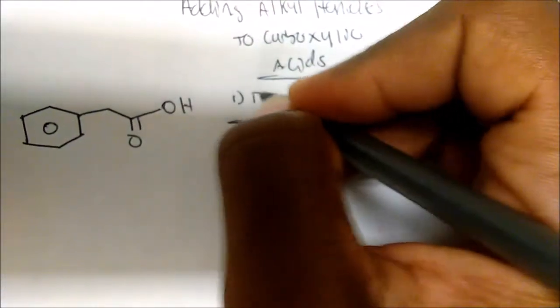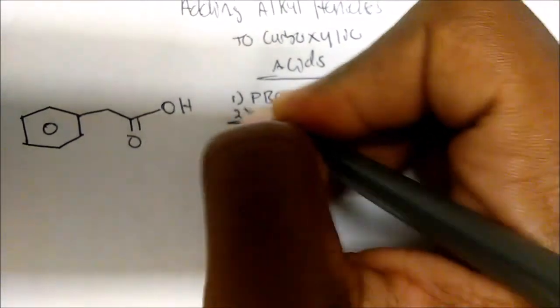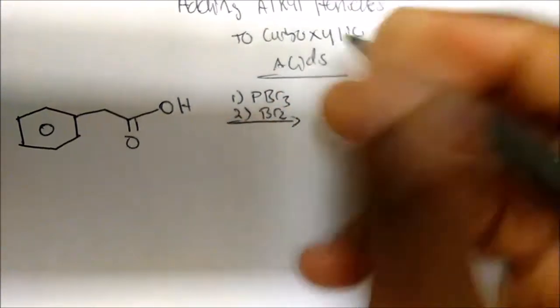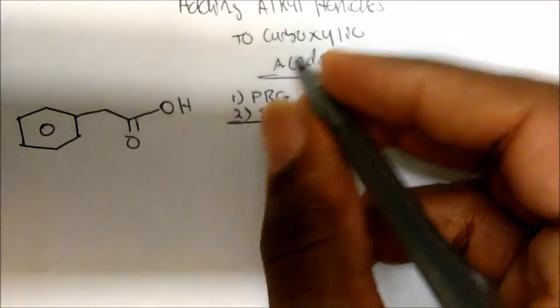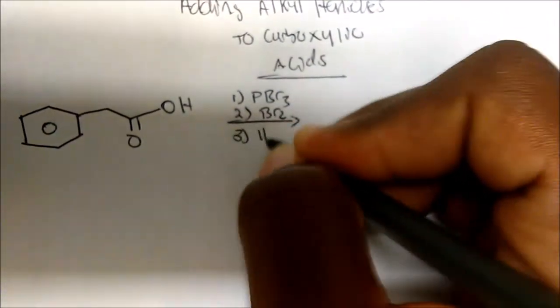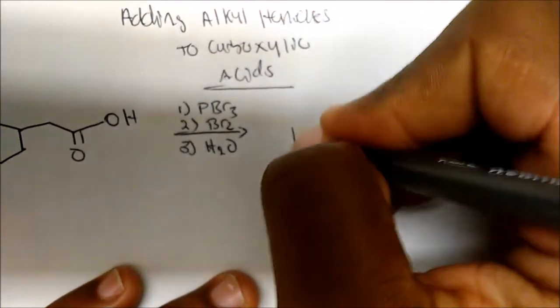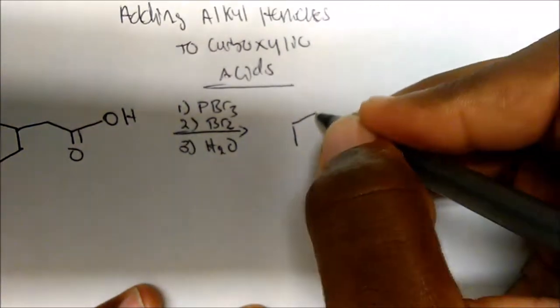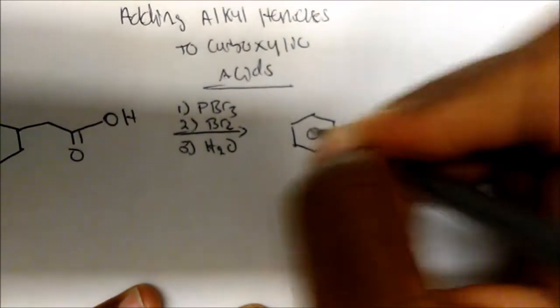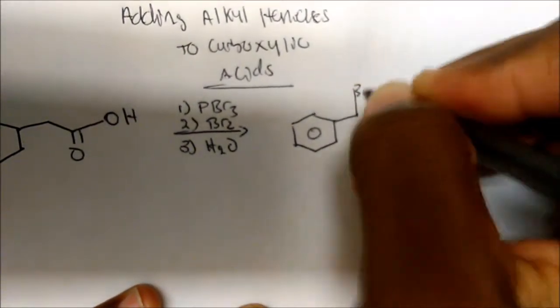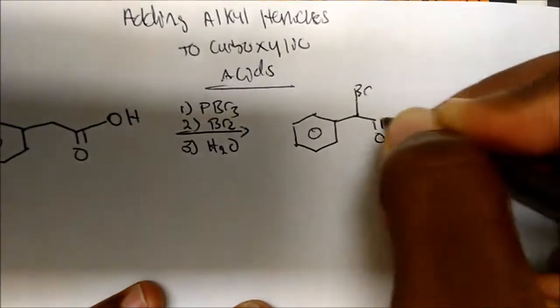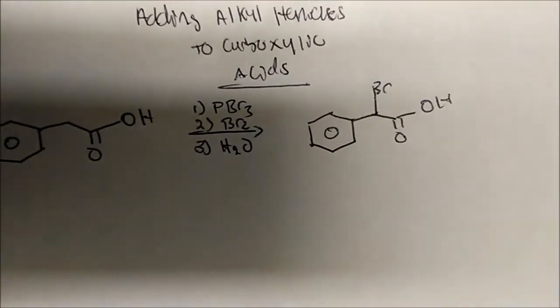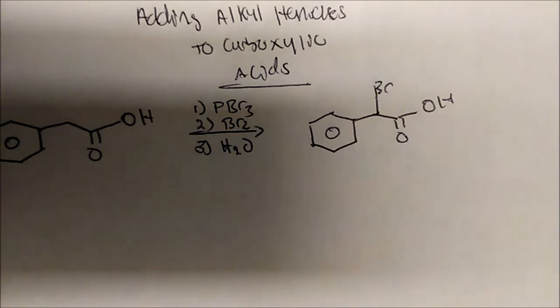In the first step I add PBr3, second step I add bromine. In this case I'm just gonna use bromine as the halogen. And in the third step we add water. Here's what I'll get. I'll get the halogen right there. I'm gonna have my carboxylic acid. So that's the general form.